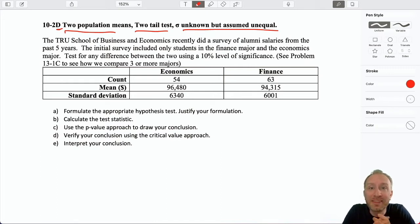The TRU School of Business and Economics recently did a survey of alumni salaries from the past five years. The initial survey included only students in finance and economics majors, test for any difference between the two using 10% level of significance. So we are going to revisit this problem here. We're looking at just these two majors when we get into comparing multi-populations. Then we'll see how we can add more of our majors, because certainly there's more than just economics and finance available.